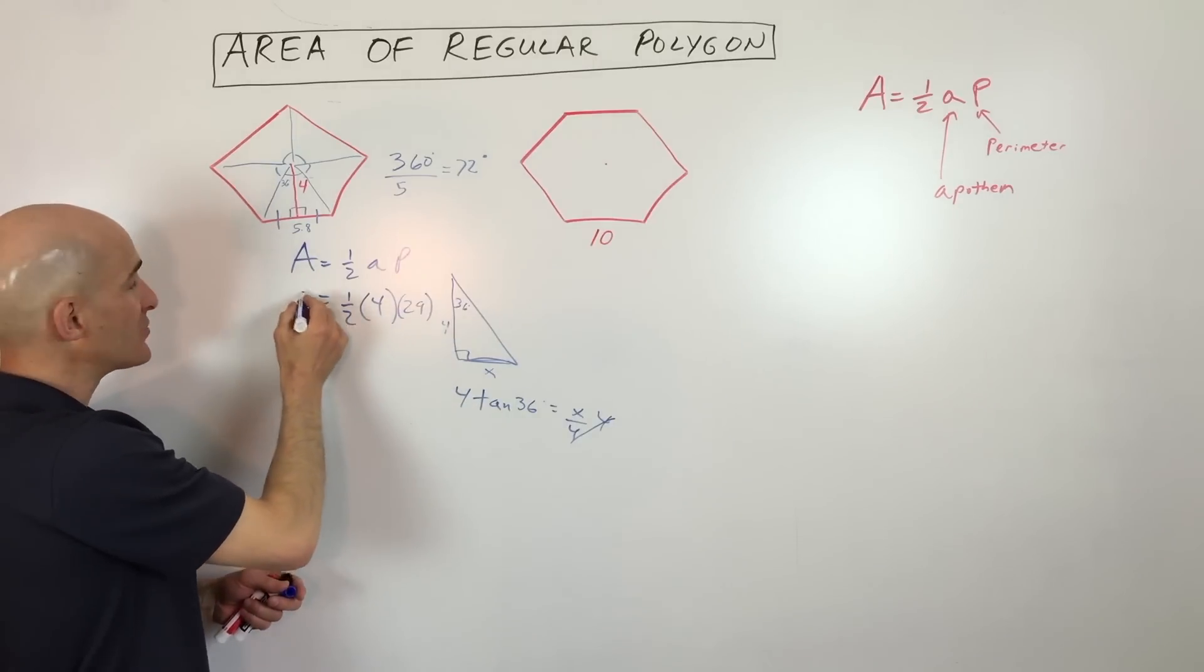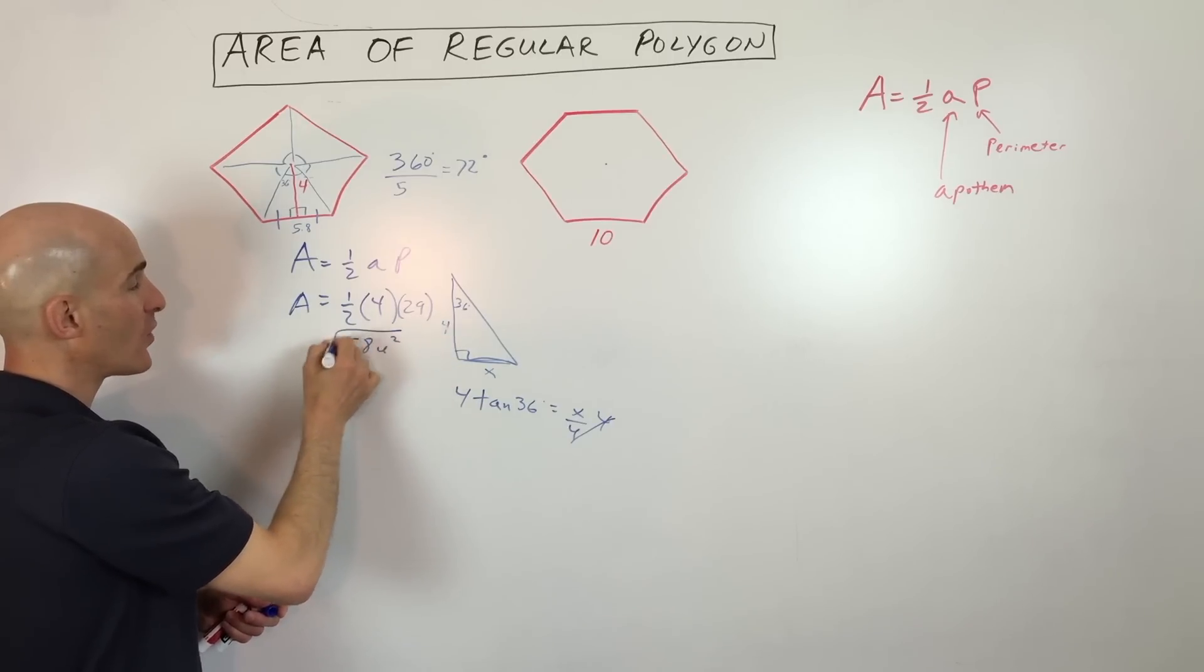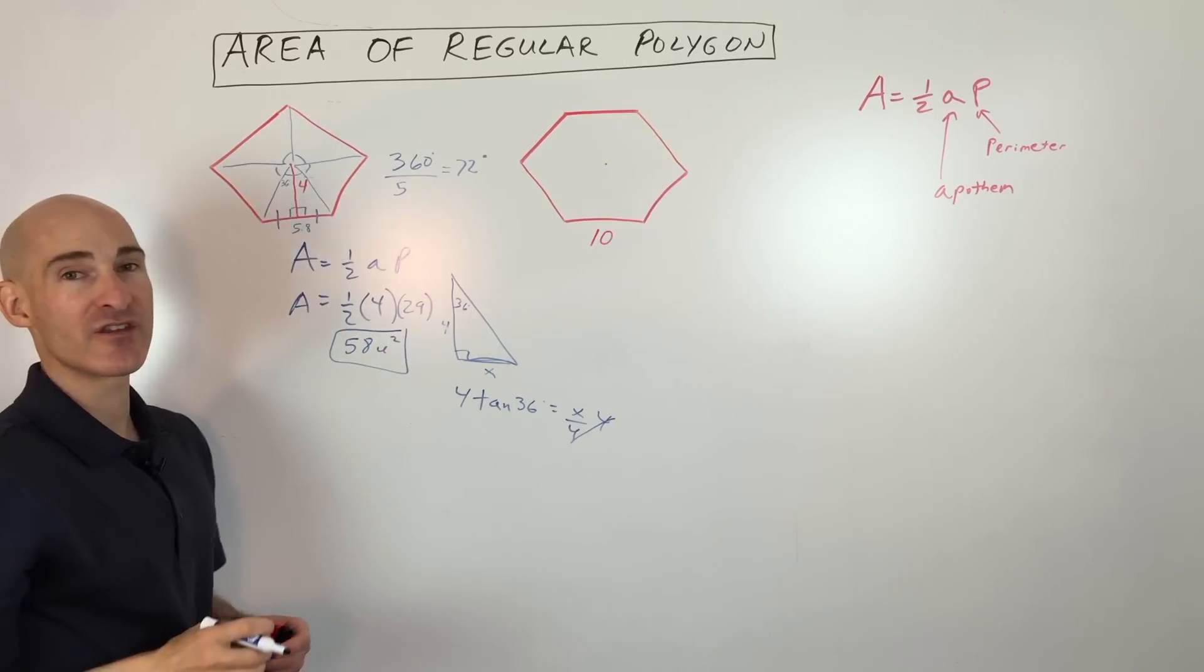And so now we've got it. So the area of the regular polygon is going to be 1 half times 4, which is 2, times 29 is 58 units squared. So that's the entire area there.